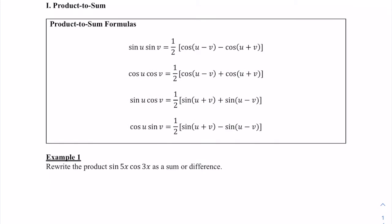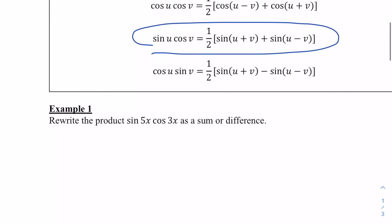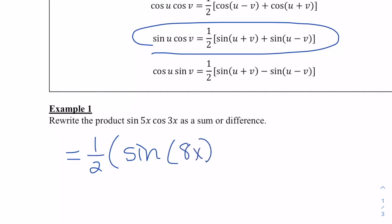For the first example, we're going to rewrite the product of sine of 5x times cosine of 3x and make it a sum or difference. Our u is 5x and our v is 3x. So we'll have one half times the sine of u plus v, which is 8x, plus the sine of u minus v, which is 2x.